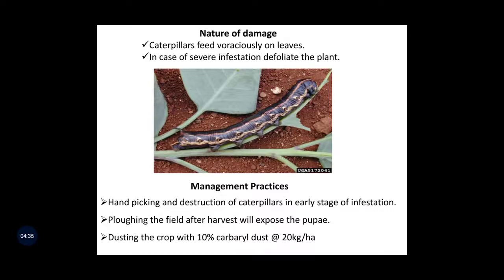The management practices are as follows: firstly, hand picking and destruction of caterpillars in the early stage of infestation. Then ploughing the field after harvest will expose the pupa. Also dusting the crop with 10% Carbaryl dust at the rate of 20 kg per hectare. These are the two major pests of sweet potato. Thank you.